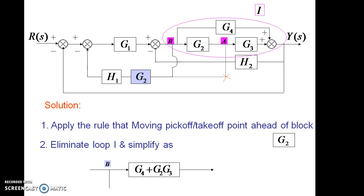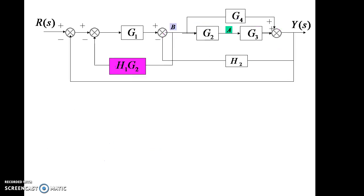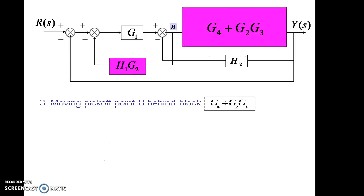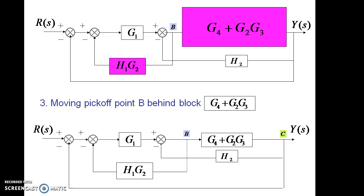Again, G4 and G2 G3 will come in parallel connection, so it can also be replaced by a single block as G4 plus G2 G3. Next, again moving the pick-off point B behind a block G4 plus G2 G3, we can have the block diagram as shown. Since the pick-off point is taken after the block, its effect is to be equalized, so that feedback path includes a new factor 1 by G4 plus G2 G3. Now the effect will be nullified.